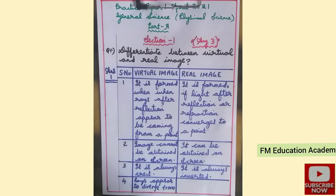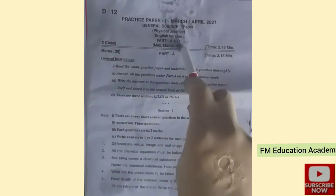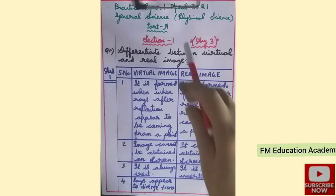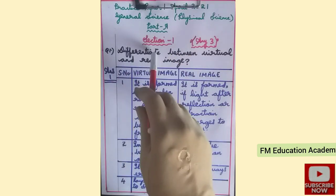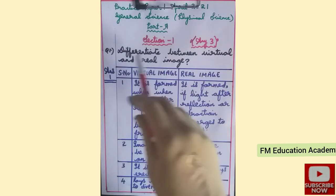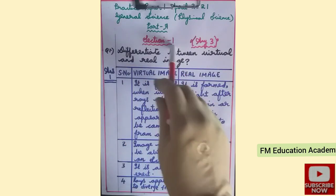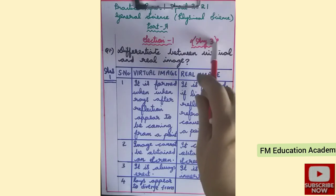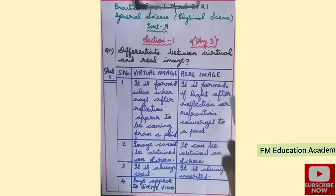In this video we will be discussing practice paper 1, April 2021 General Science, Physical Science paper. The physics paper will be of 40 marks in your final exam. In Section 1, Question 1 asks to differentiate between virtual image and real image. In Section 1 there are six questions and you have to answer any three, but in this video we will see all the questions without choices so that you can practice for the final exam.